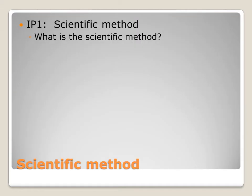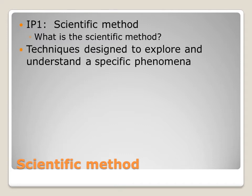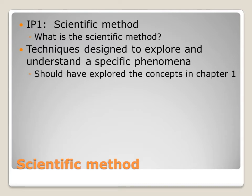Let's look at what the scientific method is — we'll review this, as it was already covered in chapter one. Simply put, the scientific method is just a set of guidelines or rules that allow scientists to properly explore and understand any scientific phenomena. You explored these concepts in chapter one.